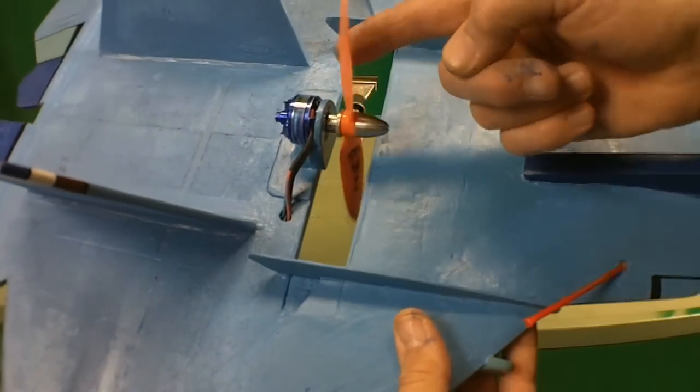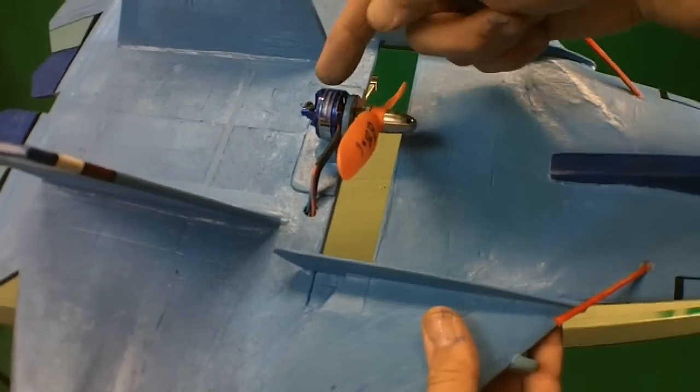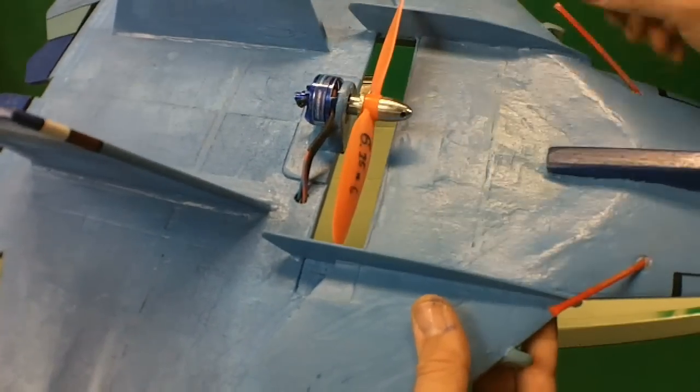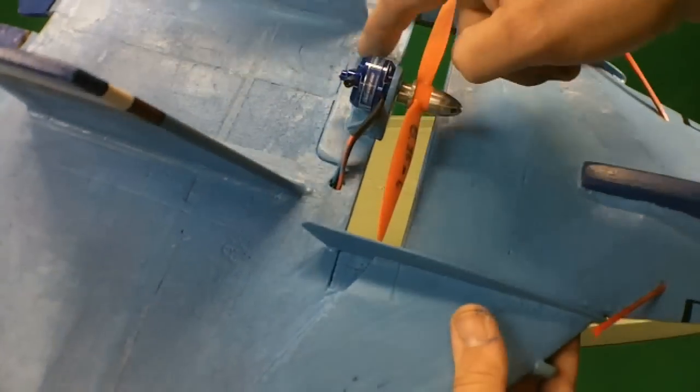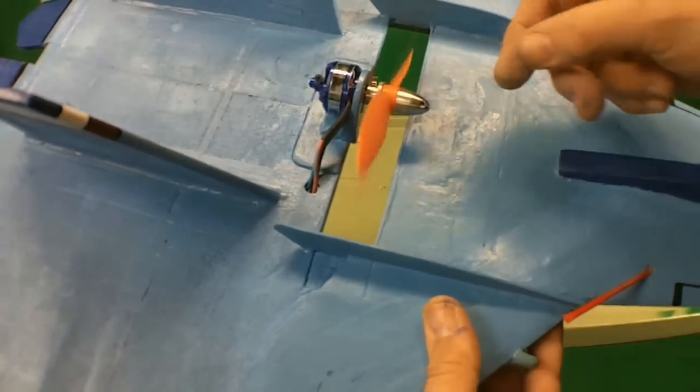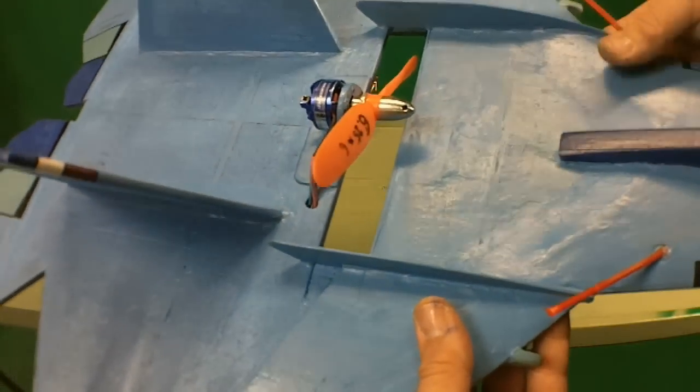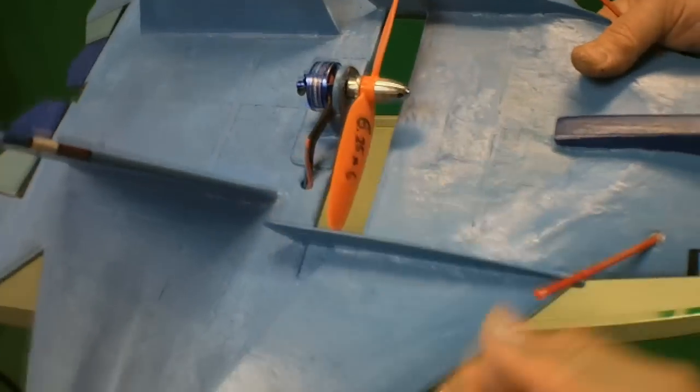So the propeller is going in the normal direction you'd see if it was on the front of the airplane, and so I strengthened this up a little bit with balsa wood and made a custom propeller, six by six.